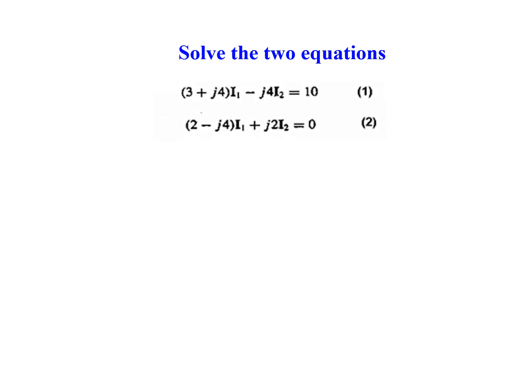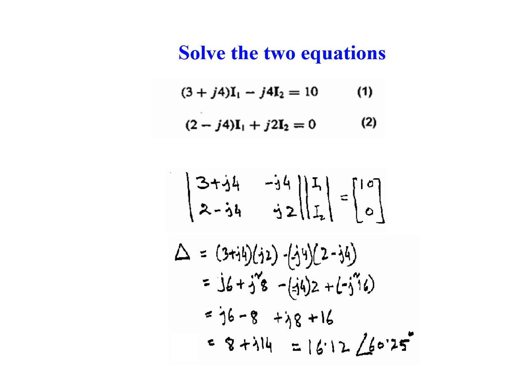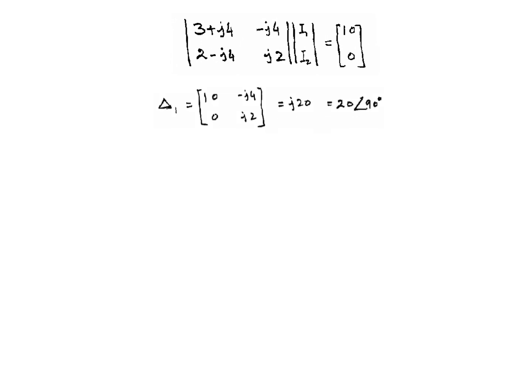Now we have grouped the two equations into like terms, so we write in determinant form. From the determinant we can find delta, delta1, and delta2 to find the currents. First finding delta by multiplying and subtracting, we find delta to be 16.12 at angle 60.25 degrees. For delta1, we replace the first column with values 10 and 0.